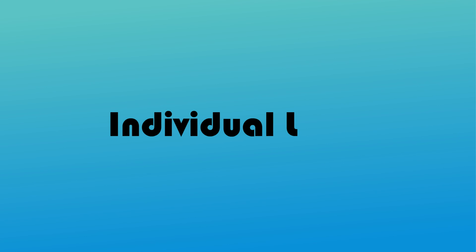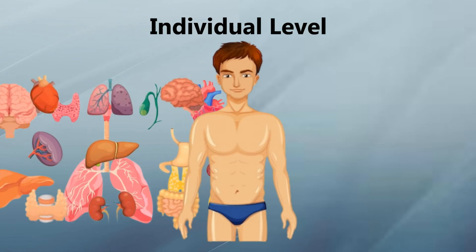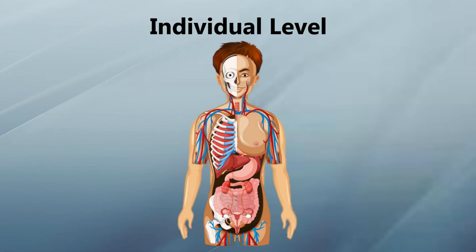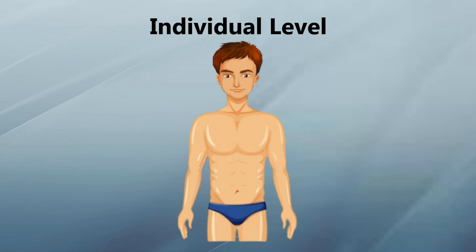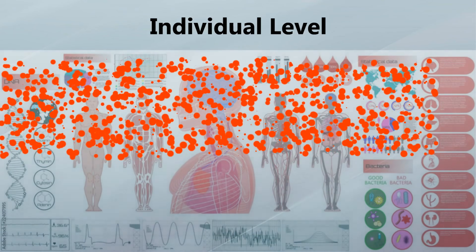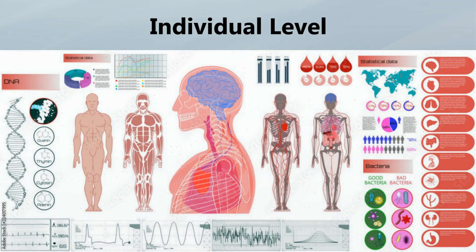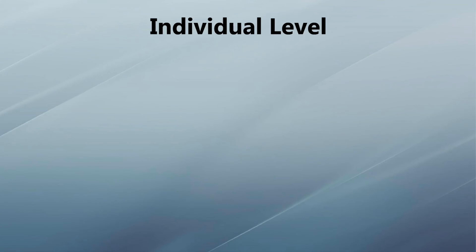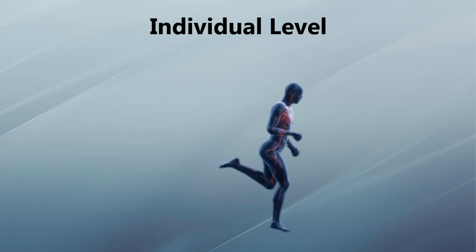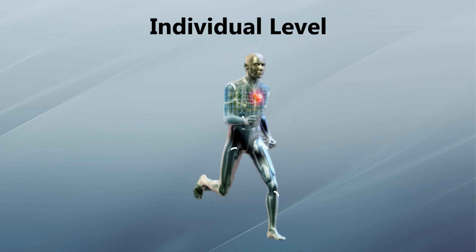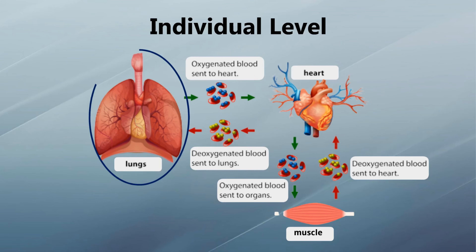At the individual level, different organs and organ systems are organized together to form an individual or organism. In an organism, the functions, processes, and activities of various organs and organ systems are coordinated. For example, when a person is engaged in continuous hard exercise, not only are the muscles working, but there is also an increase in the rate of respiration and heartbeat, supplying more oxygen and food to the muscles, which they need for continuous work.